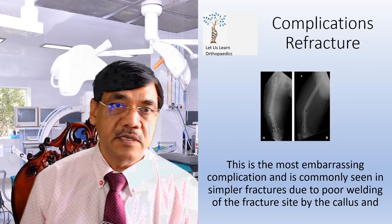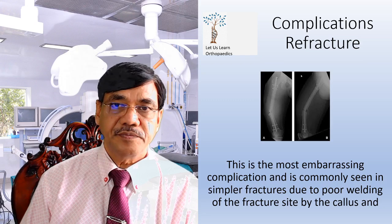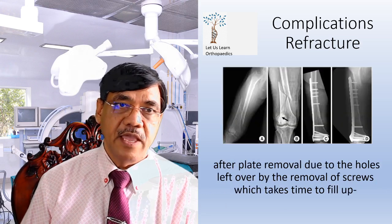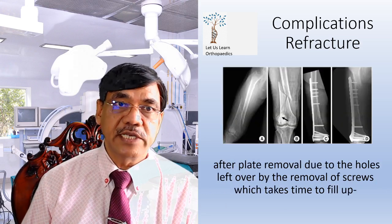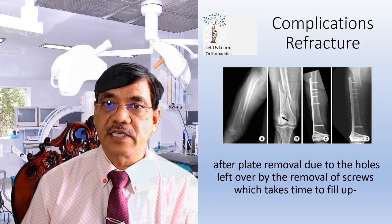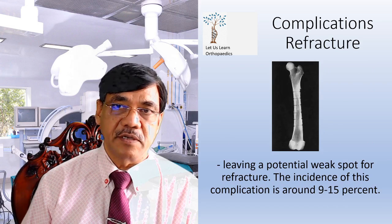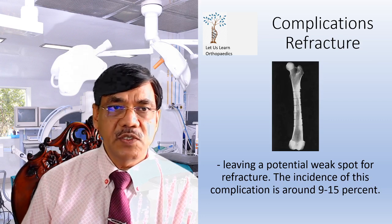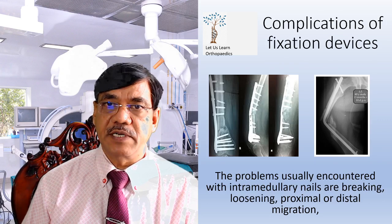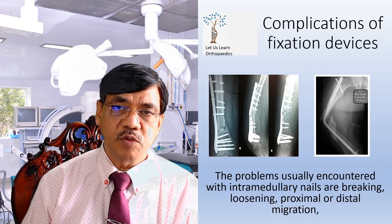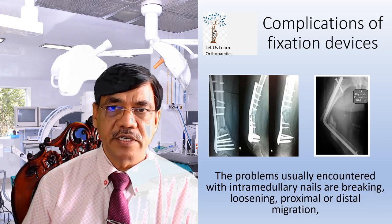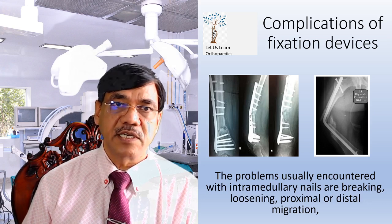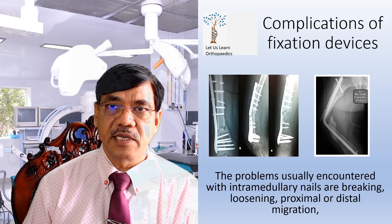Refracture is the most embarrassing complication and is commonly seen in simpler fractures due to poor bridging of the fracture site by callus, and after plate removal due to holes left by screw removal which take time to fill up. The incidence of this complication is around 9 to 15%. Complications of the fixation device include problems with intramedullary nails such as breaking, loosening, proximal or distal migration. As seen in the picture, the nail is bent.